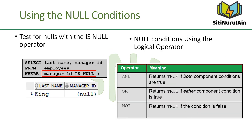The null conditions include the IS NULL condition and the IS NOT NULL condition. The IS NULL condition tests for nulls. A null value means that the value is unavailable, unassigned, unknown, or inapplicable. The slide example retrieves the last names and managers of all employees who do not have a manager.